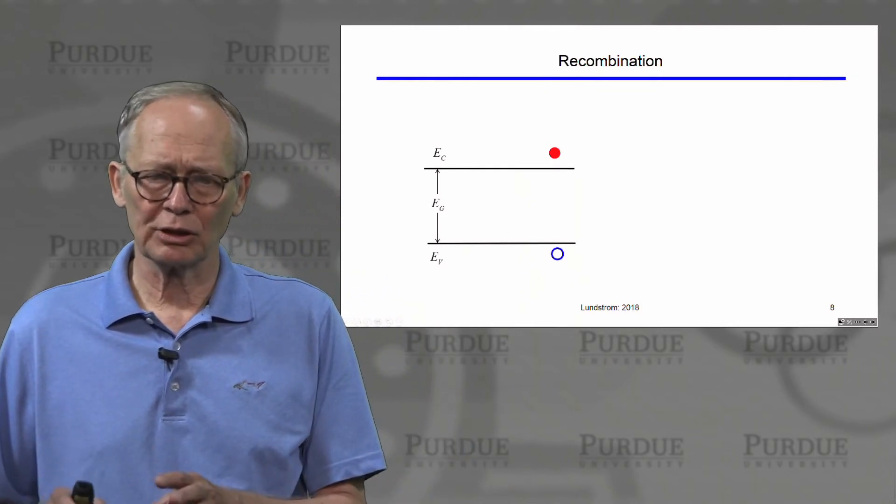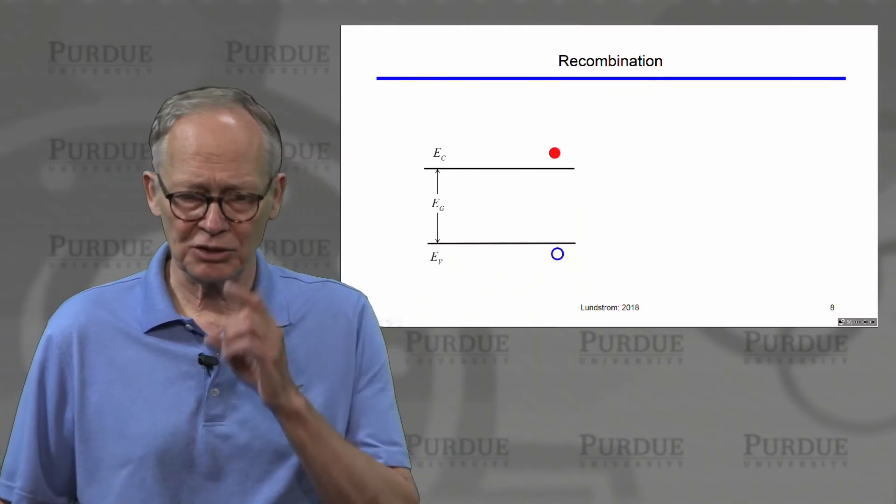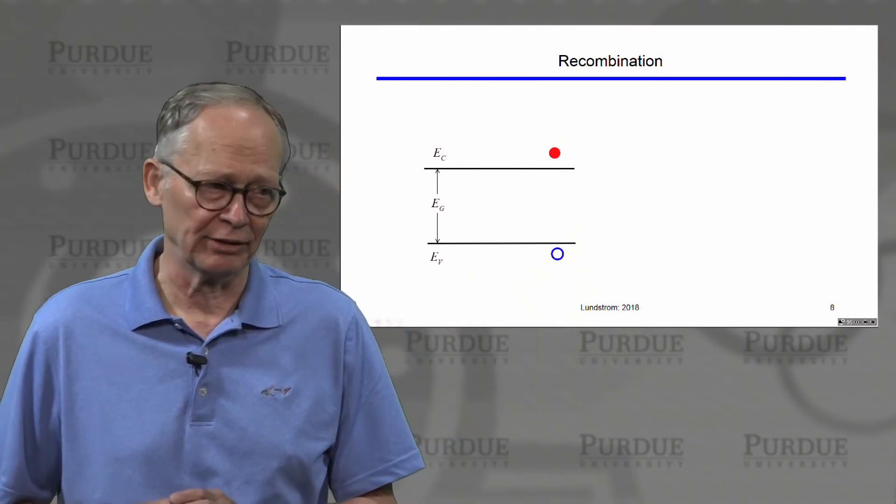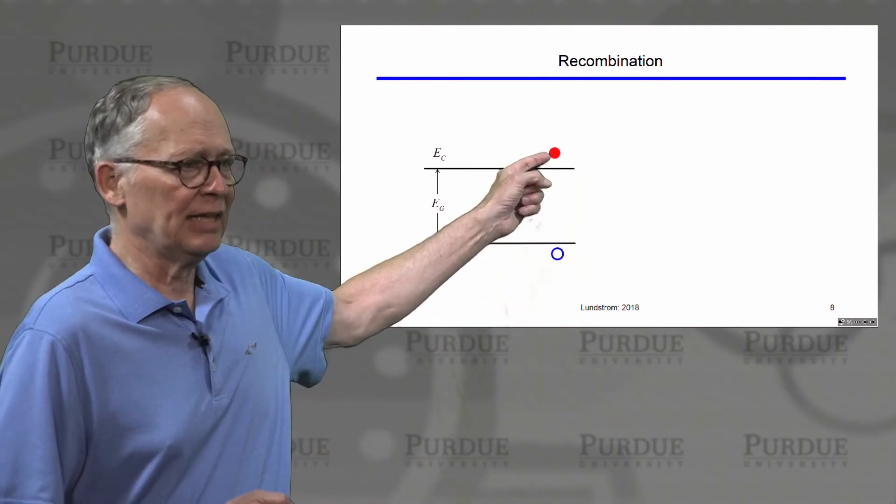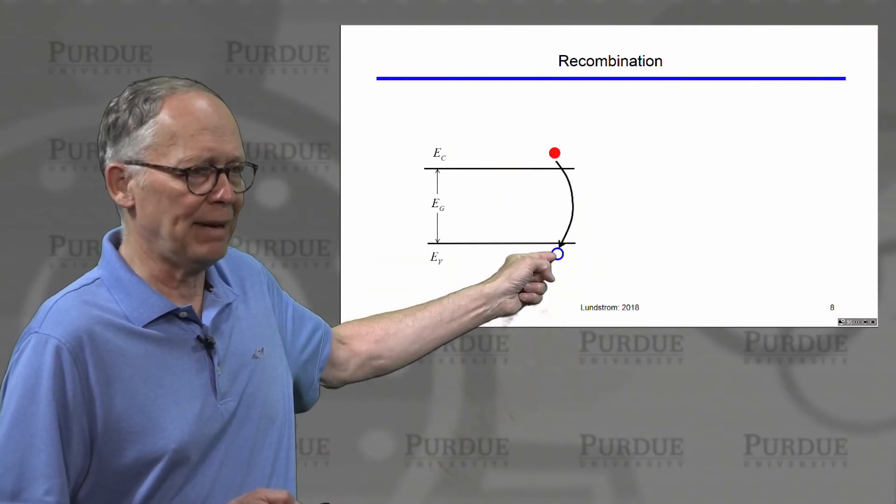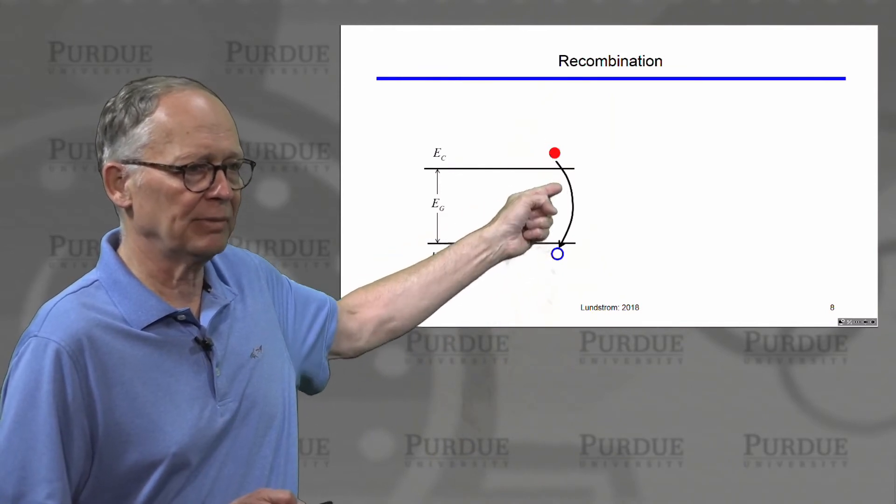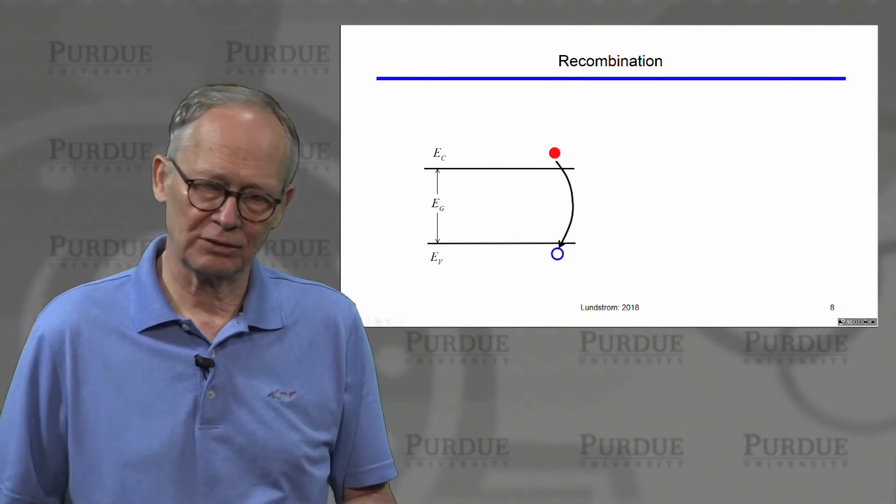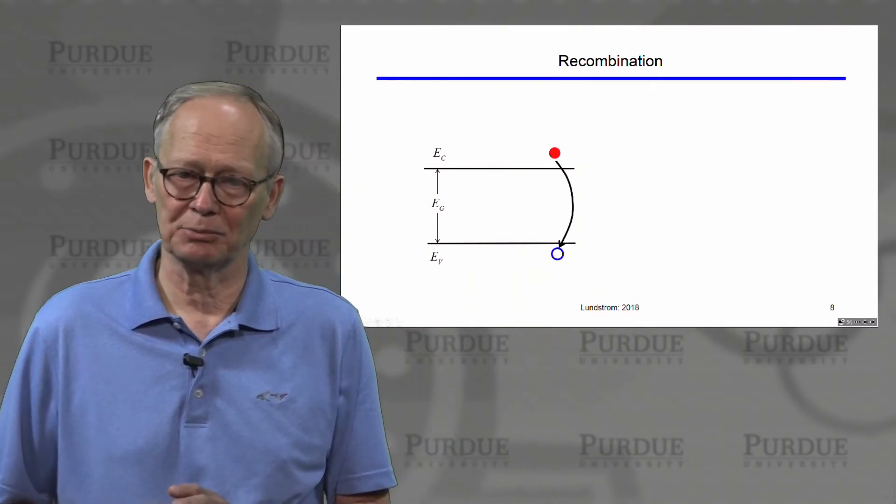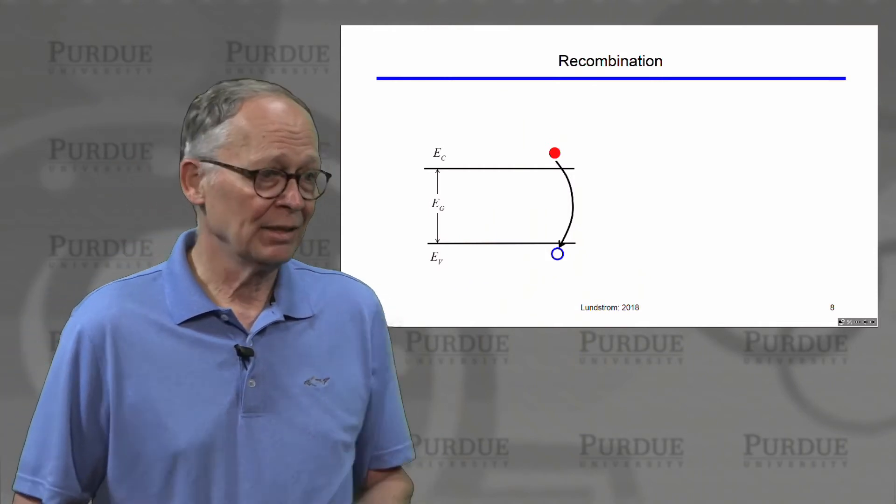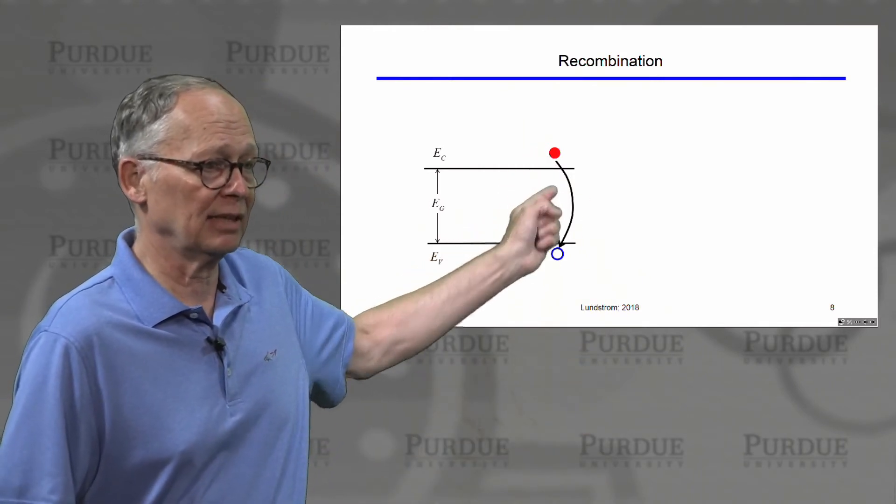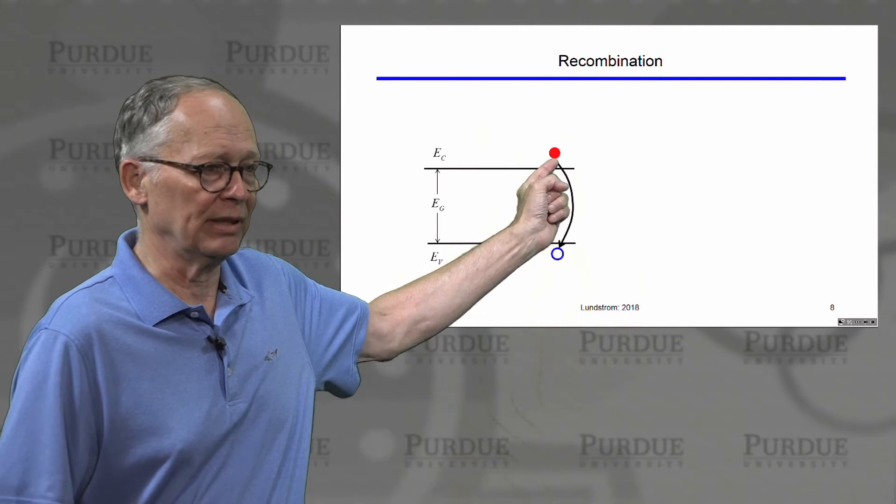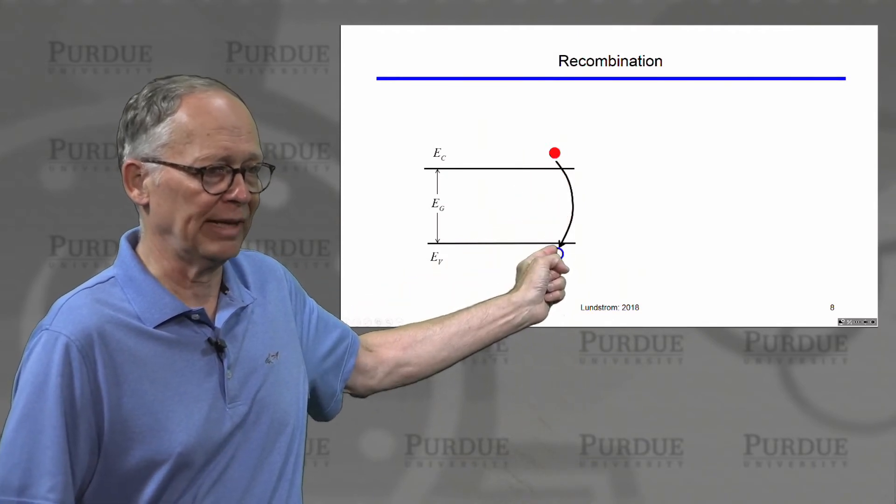Now later on in the course, we're going to say quite a bit more about the recombination process. But I just want to say a couple of words at this point and then we'll return to it later in the course. Remember we talked about how it's possible for an electron to fall back down into the valence band, an electron in the conduction band to drop down into the valence band and fill up that hole or replace that covalent bond. This is called a recombination process. After this process has occurred, we have one fewer electrons in the conduction band and one fewer holes in the valence band.